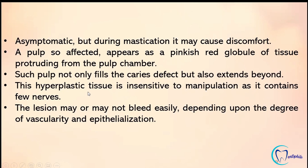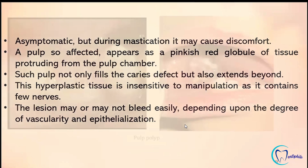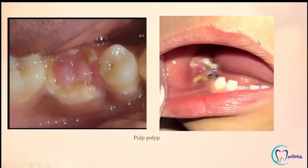This hyperplastic tissue is insensitive to manipulation as it contains only a few nerves. The lesion may or may not bleed easily depending upon the degree of vascularity and epithelialization. Two pictures of pulp polyp are shown — one in a child and one in an adult.